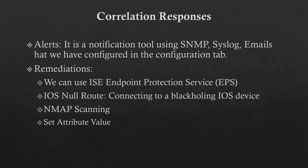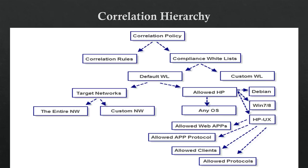There is also Nmap network map scanner and a set attribute value feature. Looking at the correlation hierarchy diagram: a correlation policy is divided into three things — traffic profile, correlation rules, and compliance whitelist. In the correlation pool, you create your set of rules, and in the compliance whitelist you have a default and custom whitelist.